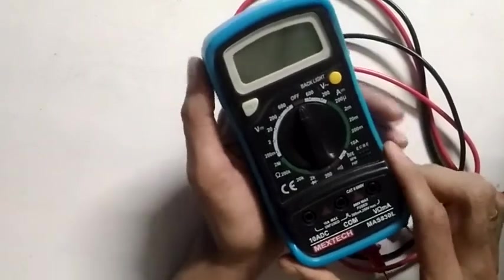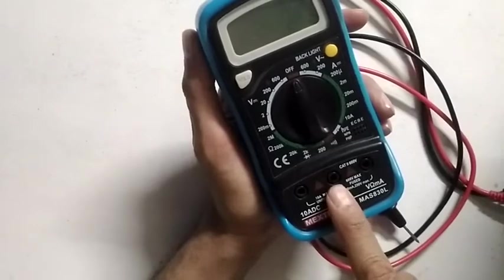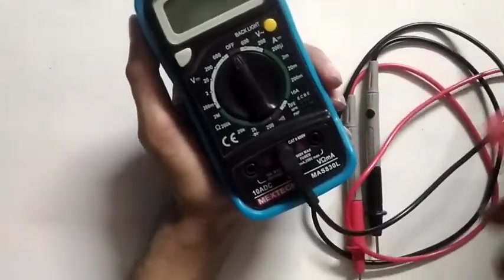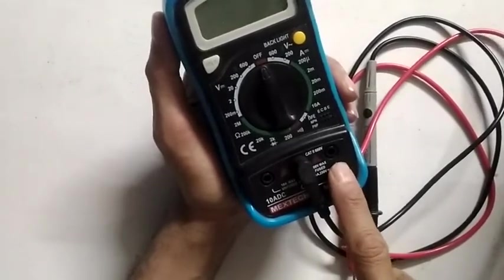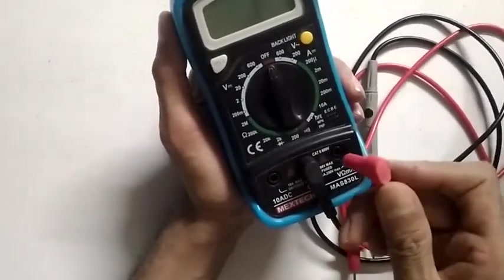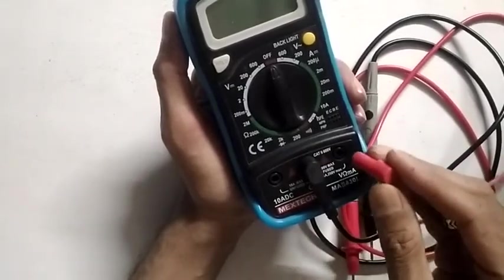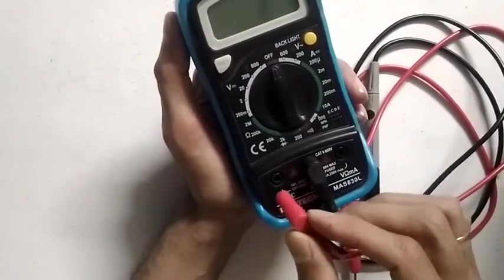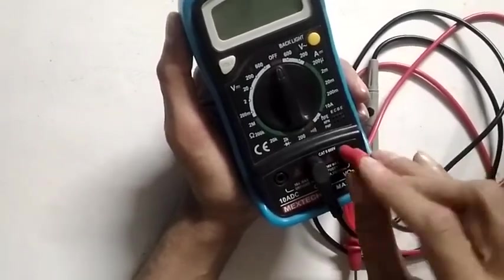Like other ones, you have the common point over here where your black probe goes in. The next one is for all standard measurements except for 10 ampere. This red probe will be connected over here. Be careful when measuring 10 ampere - make sure you remove it and connect it on this side, and as soon as your work is done, remove it and connect it back.